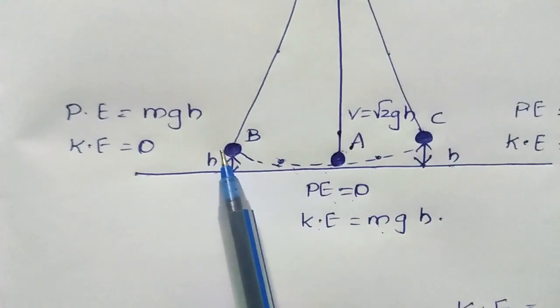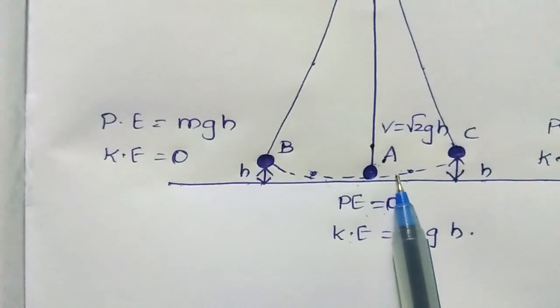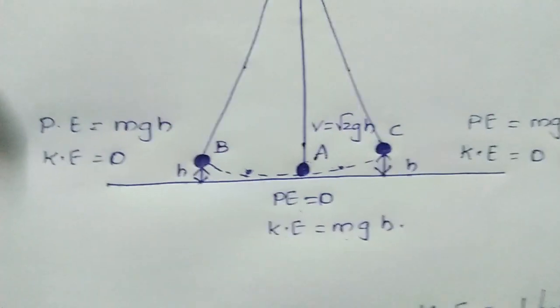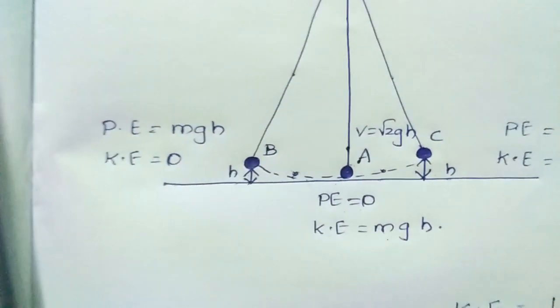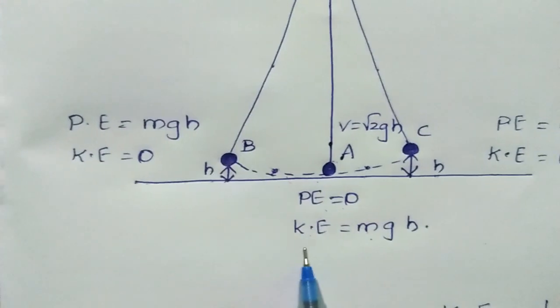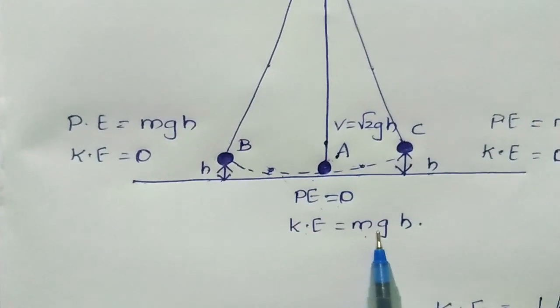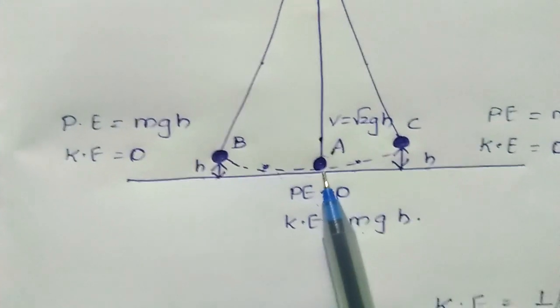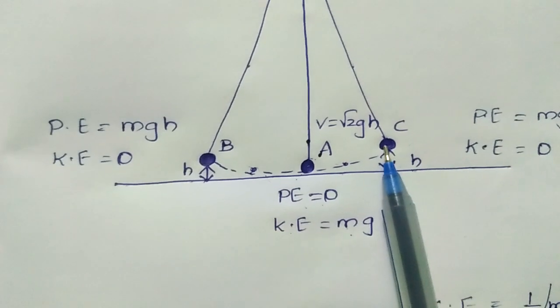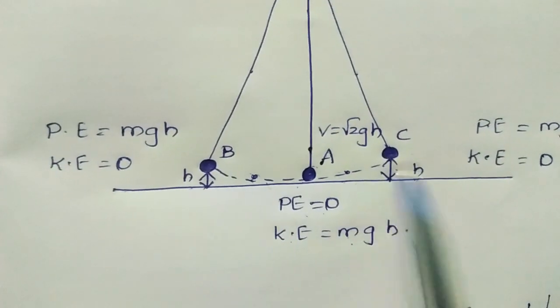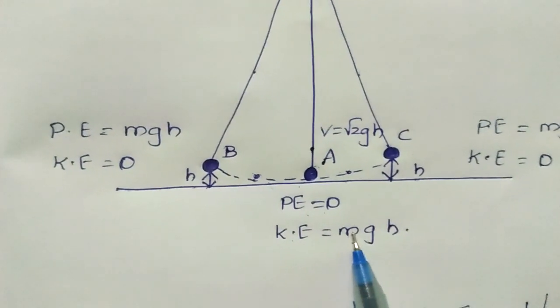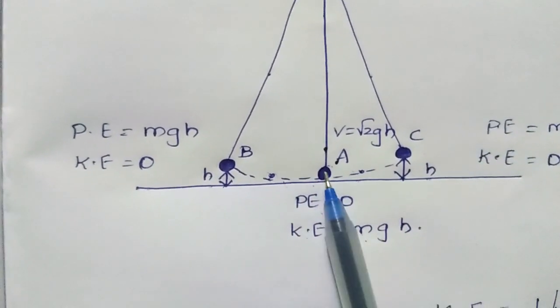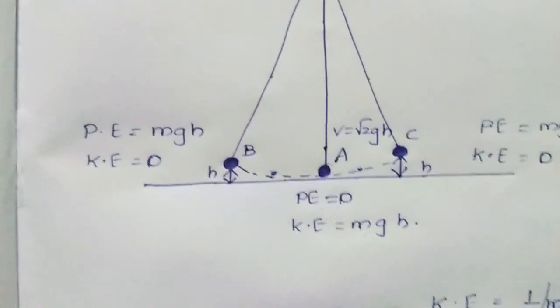Again, the bob will move from B to A because of the force of gravity. When it is moving from B to A, the kinetic energy has the value of mgh. Since it has this kinetic energy, which means the energy possessed due to the state of motion, it moves again from A to C to repeat the process.